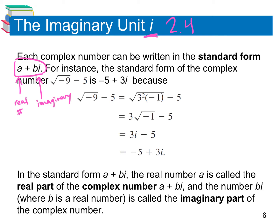Our complex number i comes from the square root of negative 1, so the square root of negative 1 is i. In the past I've said you can't take the square root of a negative because that gives us imaginary numbers — that's where i comes from. A helpful hint: if we square both sides, the squared and square root cancel, leaving negative 1 equals i squared. So anytime we see i squared, that can change into the real number negative 1. We'll see examples of this in the next few slides.